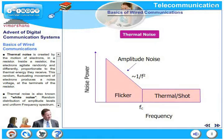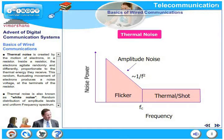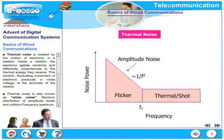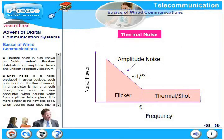Two important types of internal man-made noise are thermal noise, also known as Johnson noise, and shot noise. Thermal noise is created by the motion of electrons, for example in a resistor, where electrons agitate randomly proportionate to the thermal energy they receive. This random fluctuating movement produces a noise voltage at the terminals of the resistor. Thermal noise is also known as white noise, characterized by random amplitude levels and a uniform frequency spectrum.